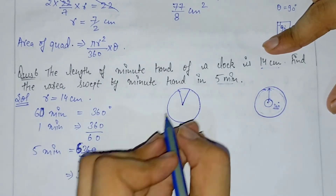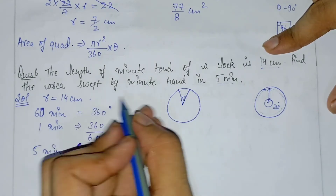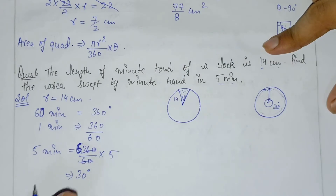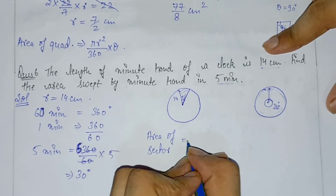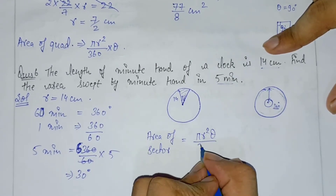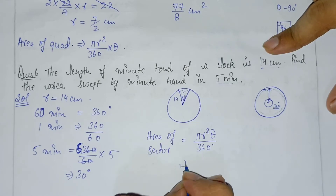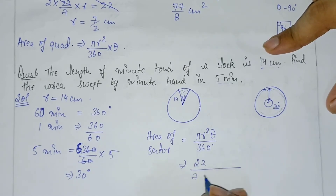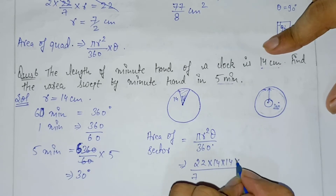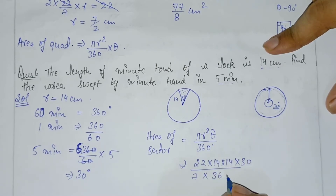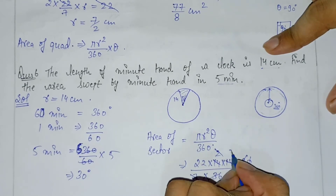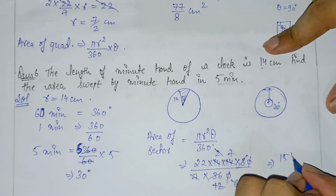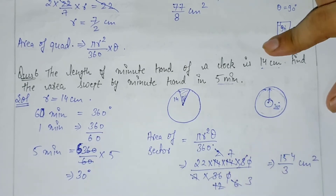Now we find the area of the sector swept. Using the formula: Area = πr²θ/360, with radius 14 cm and θ = 30°: Area = (22/7) × 14² × (30/360). Simplifying, the area equals 154/3 cm².